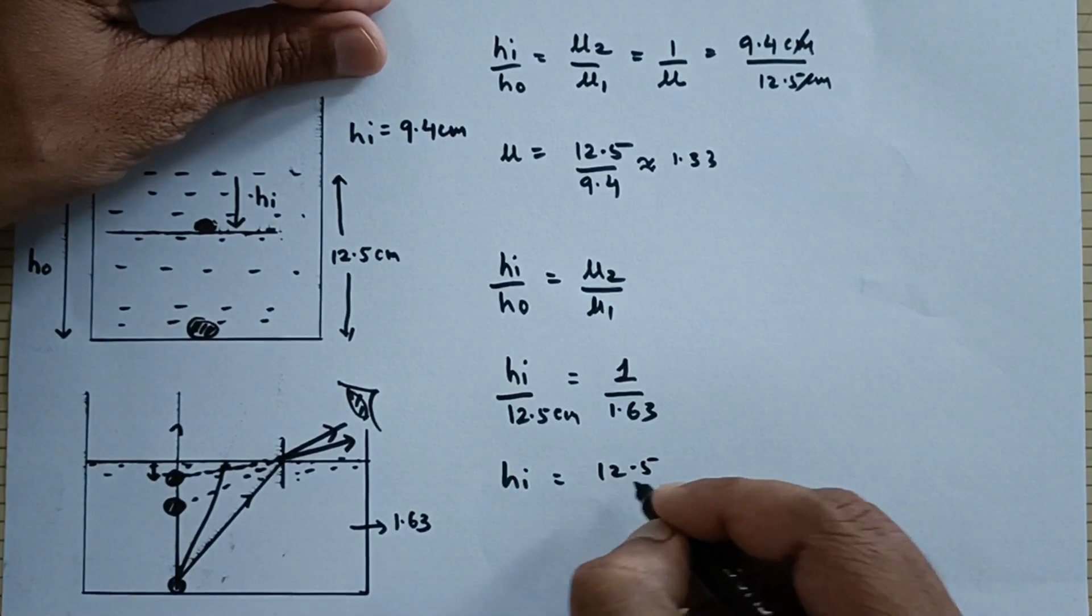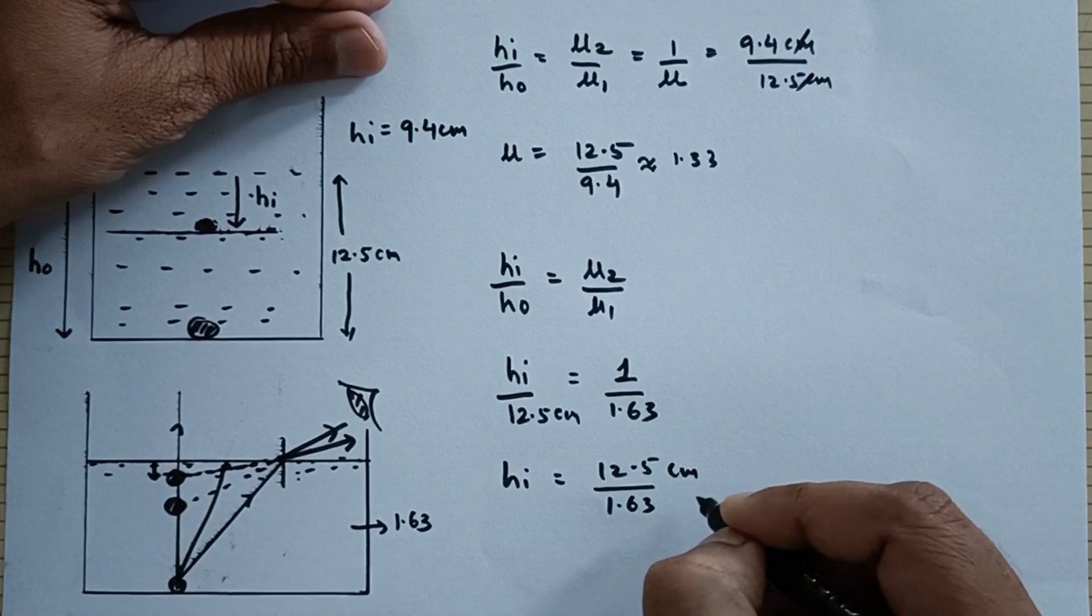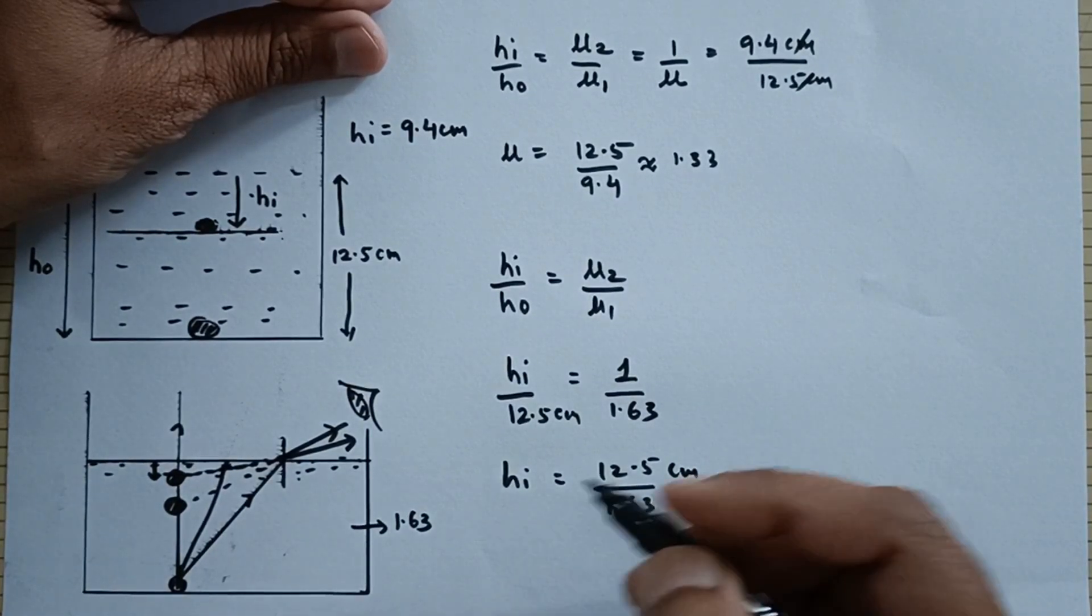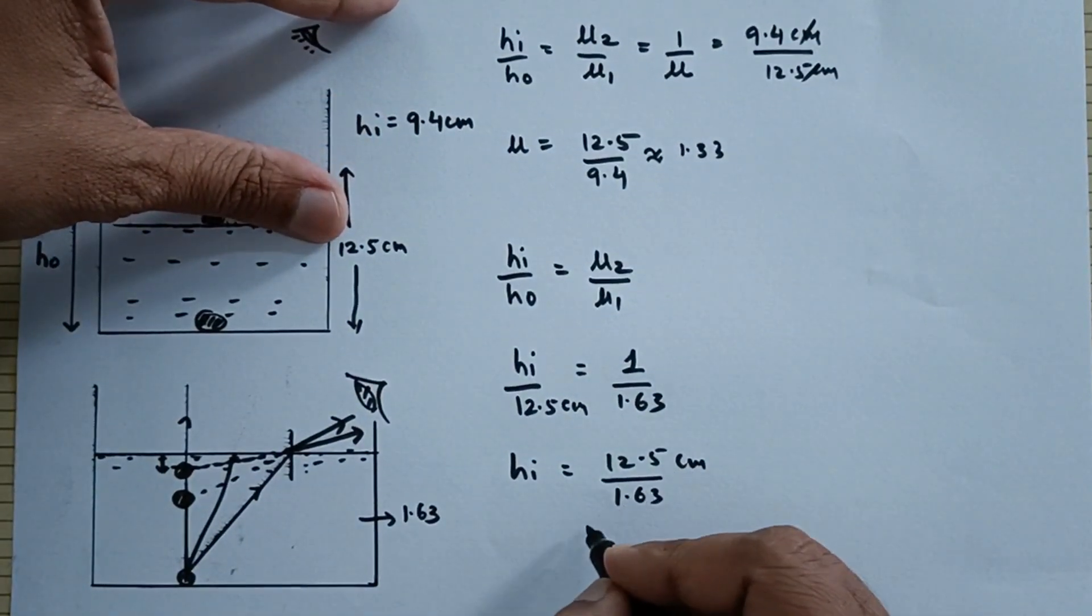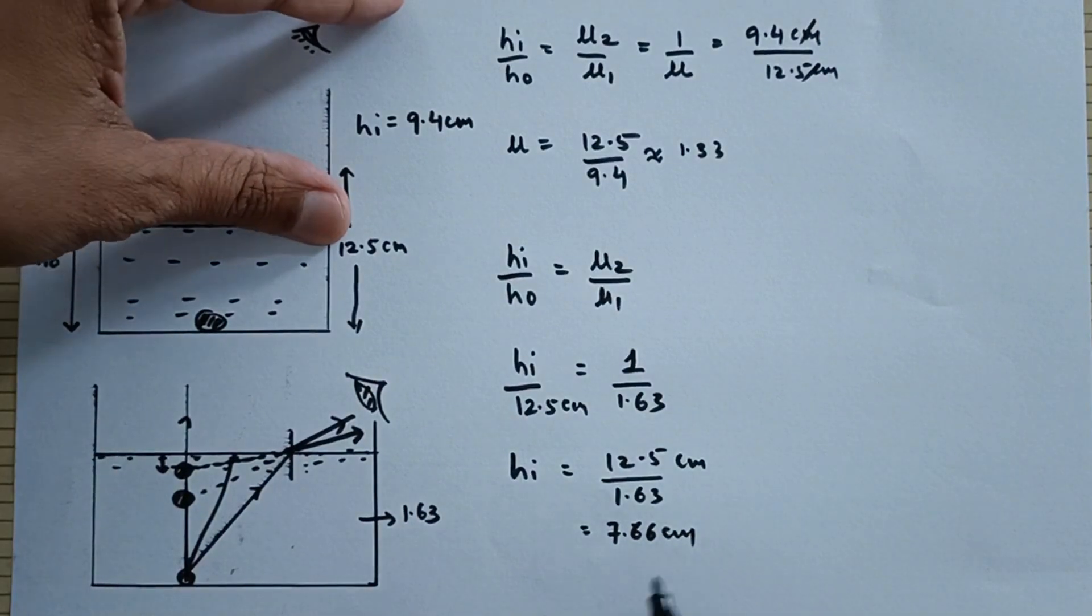So HI is equal to 12.5 divided by 1.63, this is in centimeter. It does not have any unit the refractive index and this answer would be somewhere around 7.66.